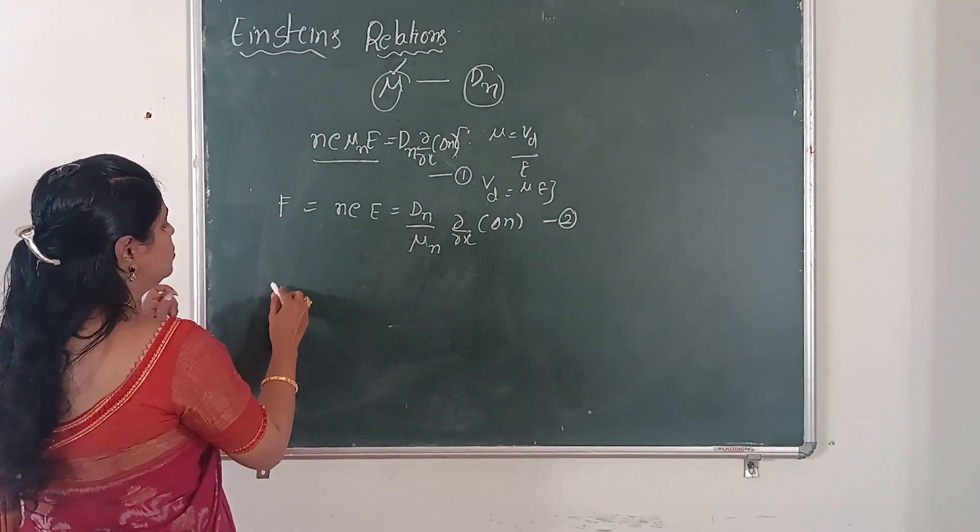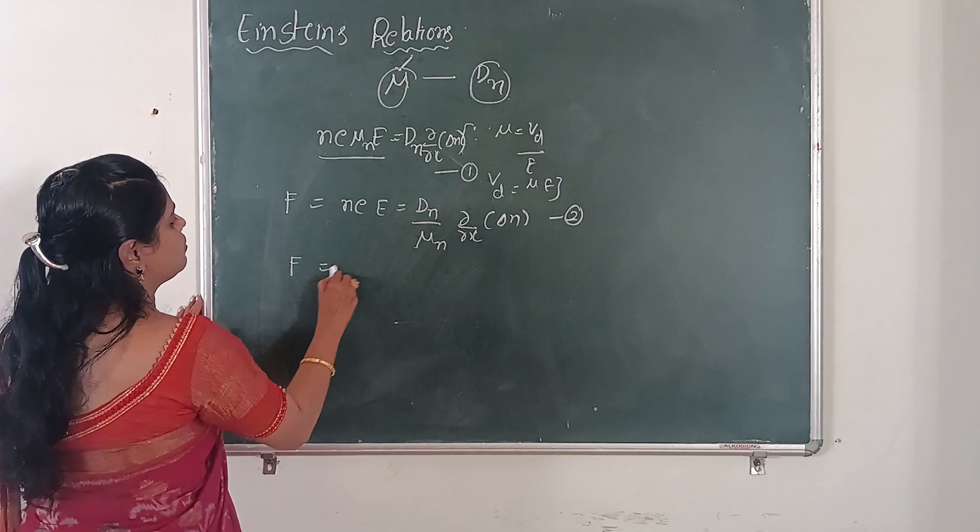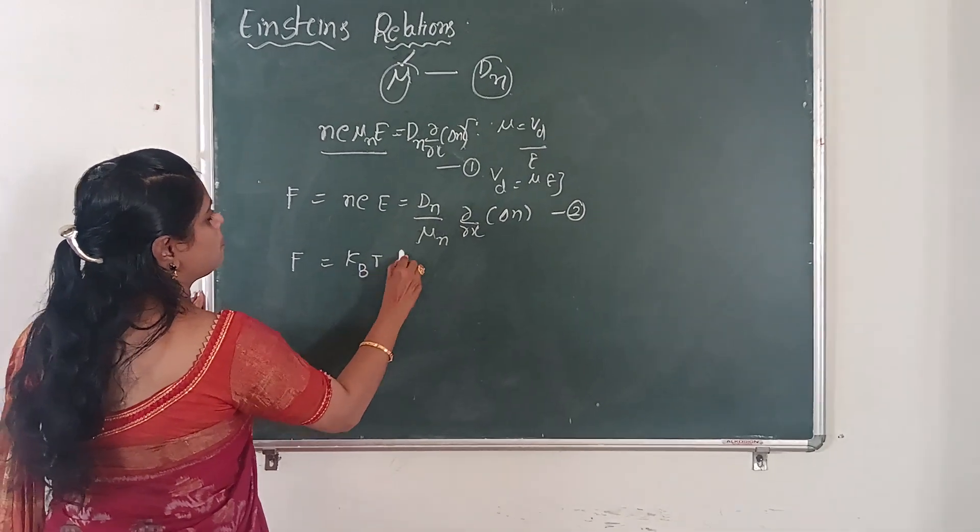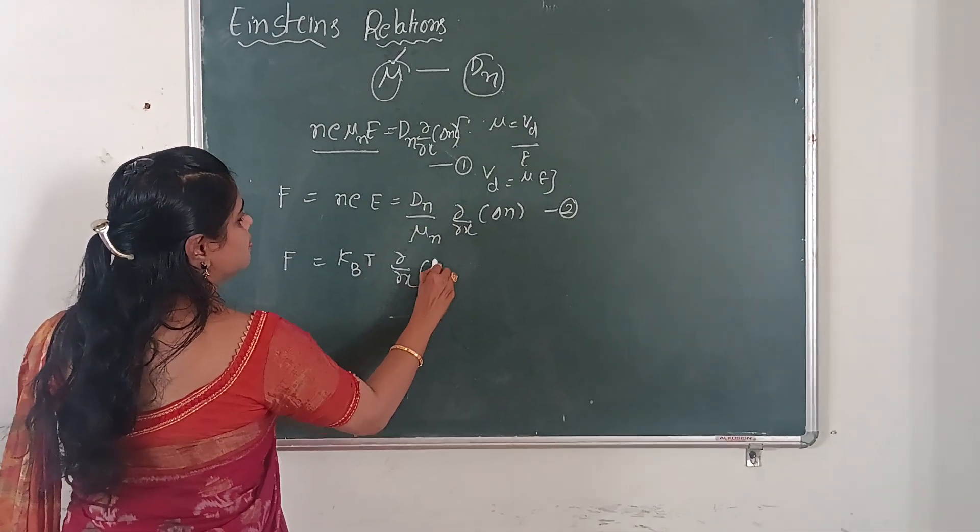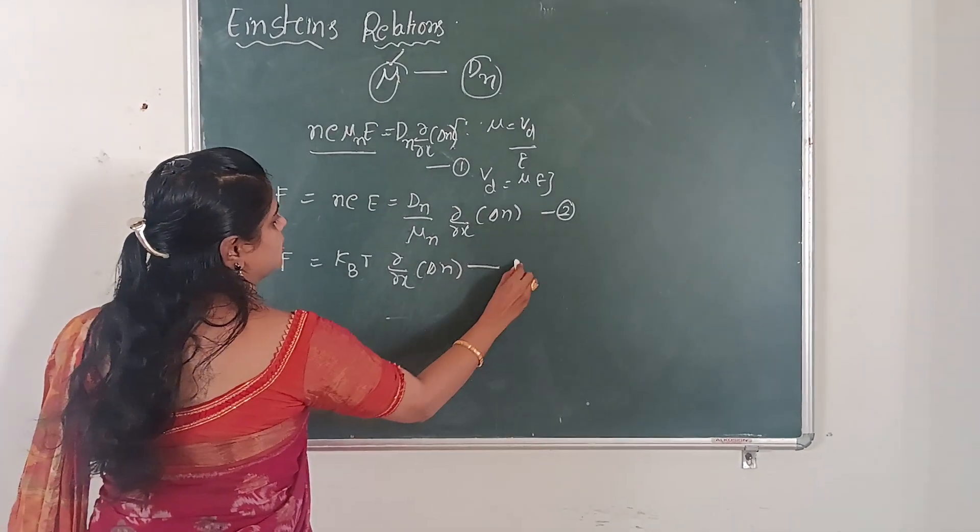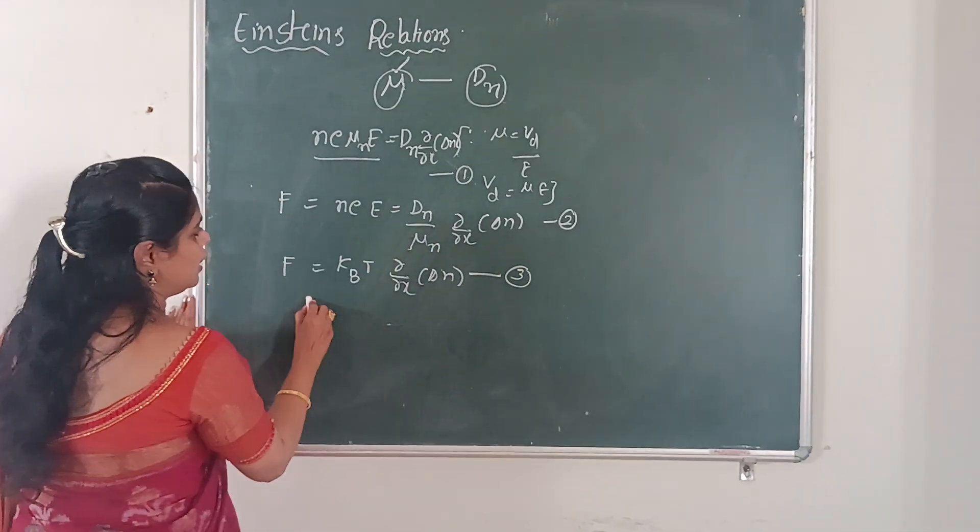So according to Helmholtz free function, F equals to KB capital T d by dx of delta n. So this is equation 3.